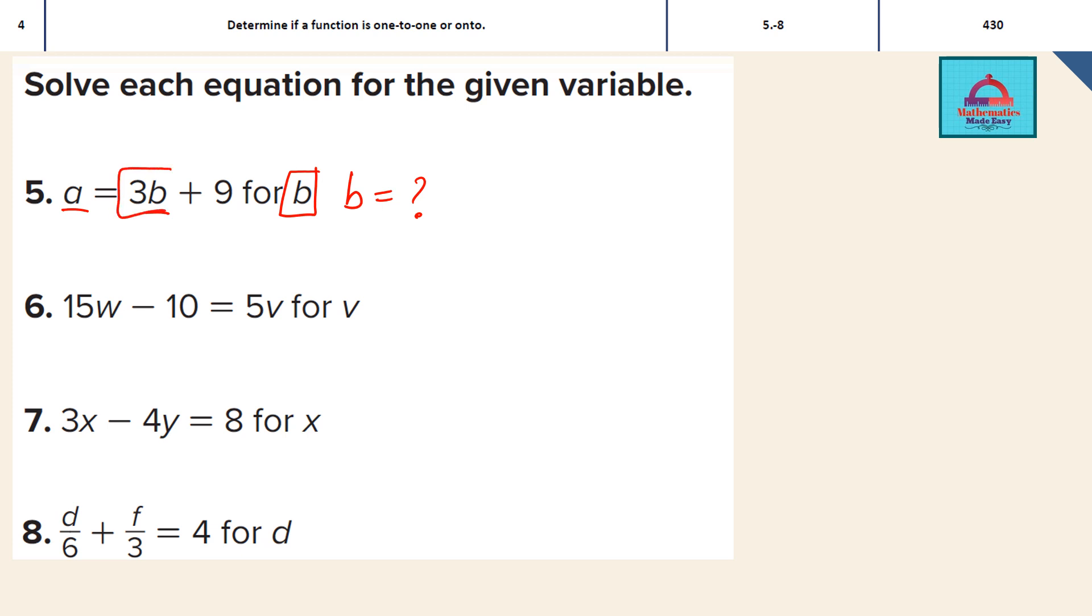I am going to keep this 3B on this side and move everything on the other side. So I need to move number 9 from right side to left side and when I do that, the equation changes in this manner. 9 becomes minus 9 because it moves from right to left and 3B is as it is. Now I need the value of variable B. So I am going to divide both sides by 3 so that this 3 and this 3 gets cancelled and we have the value of variable B.